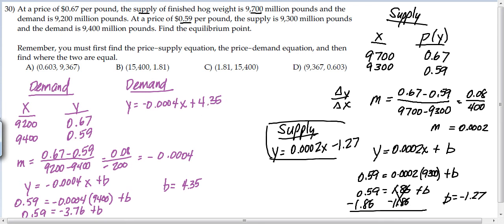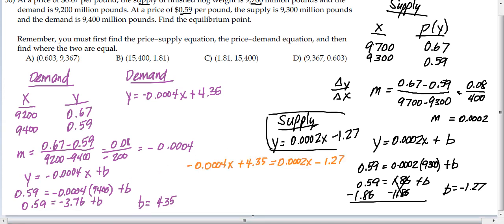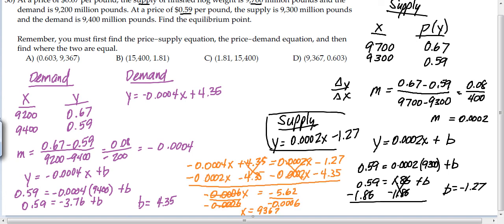Now, to find the equilibrium point, we need to set these two things equal. So I've set those equal there in orange, and I'll do the algebra steps to balance the X's on one side and the numbers on the other. So when I balance that and do all the algebra, I get that X equals 9,367. Now, we can see that B is the only one that has that for an answer choice. To find Y, then substitute 9,367 back into either equation. And so I did that substitution there, and I got the Y is 0.603.